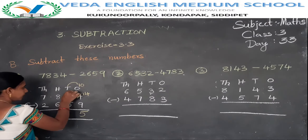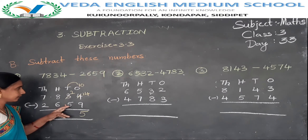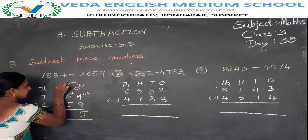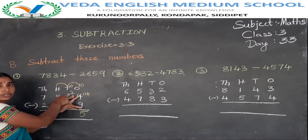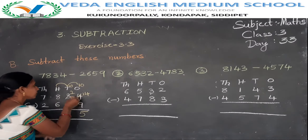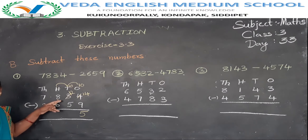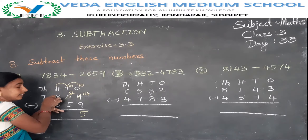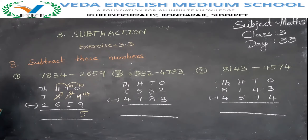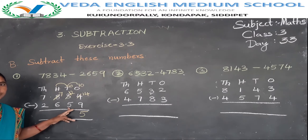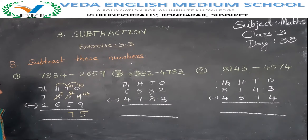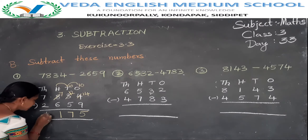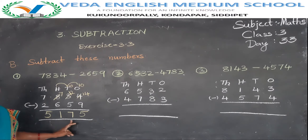Now in the tens place, we have 2 minus 5. But 5 is bigger than 2, so not possible. Take a borrow from the hundreds place to the tens place: 10 plus 2 equals 12, so 2 becomes 12. The hundreds place had 800, but since we gave 100 to the tens, it becomes 700. 12 minus 5 is 7. Then 7 minus 6 is 1. 2000 minus 2000 gives the final difference: 5175.